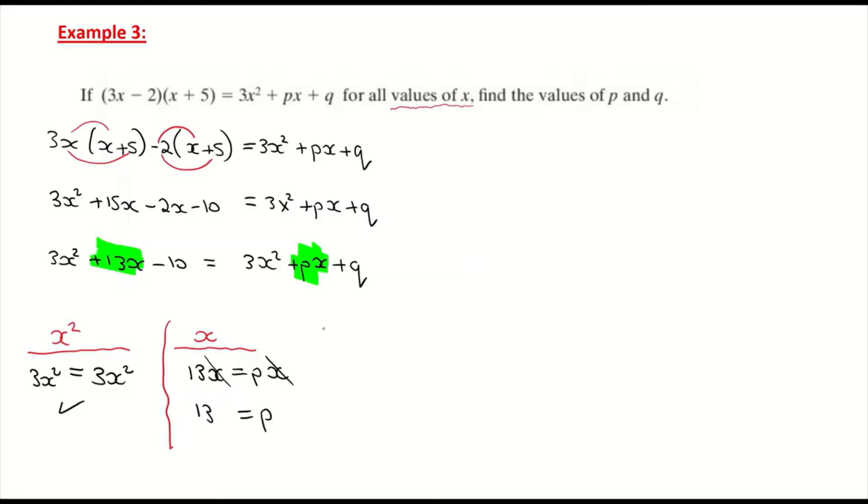Now I'm coming to my constant, the number on its own, which is q. I'm just going to write 'constant' here. A constant is a number that doesn't have an x. I'm going to pair up the -10 with the q. So that's telling me that q equals -10, isn't it? So -10 equals positive q. Therefore, -10 = q, or you can rearrange them: q = -10, whichever way you want to write it.